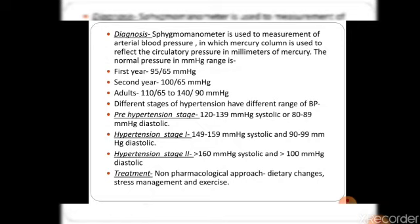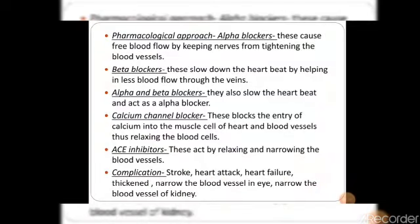In the case of hypertension, we have two types of treatment. The pharmacological approach includes medicines like alpha blockers, which allow free blood flow, and beta blockers, which slow down the heartbeat so that less blood flows out. Alpha and beta blockers are responsible for regulating blood flow. Calcium channel blockers also allow free blood flow.